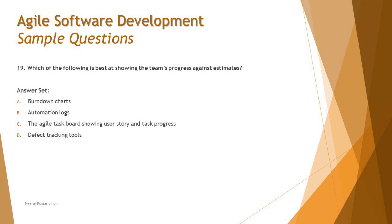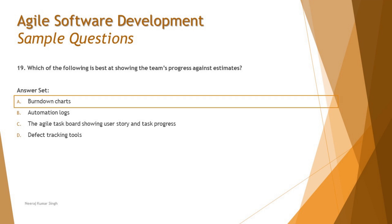Defect tracking tools help manage defects within the lifecycle and track open defects needing attention, but that's not something that compares estimates to ongoing progress. So the right answer is A: burn-down charts are the metric that helps you measure planned estimates versus actual completion during an agile project.